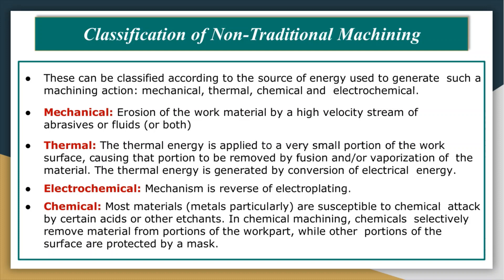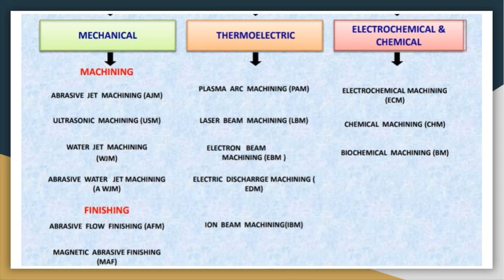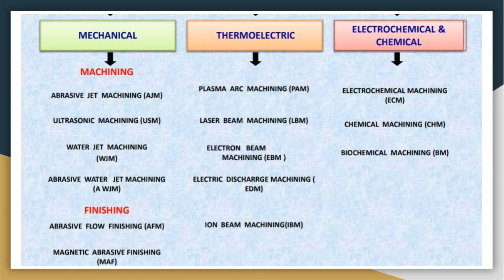Looking at the classification in detail, non-conventional processes are divided into three main categories. Under mechanical, we have abrasive jet machining, water jet machining, abrasive water jet machining, and ultrasonic machining. There are also finishing processes such as abrasive flow finishing and magnetic abrasive finishing. These are the mechanical energy based processes.